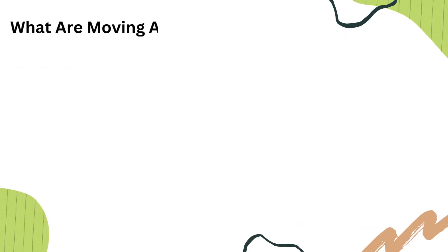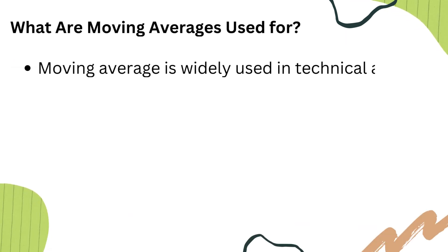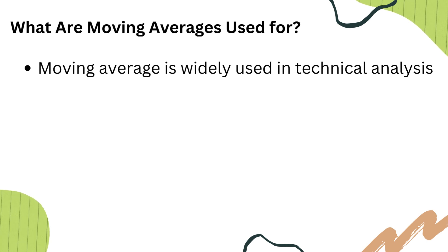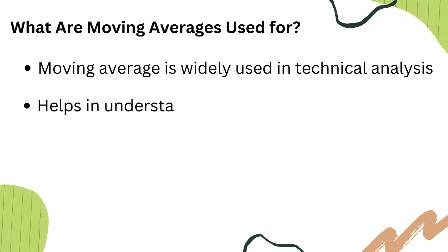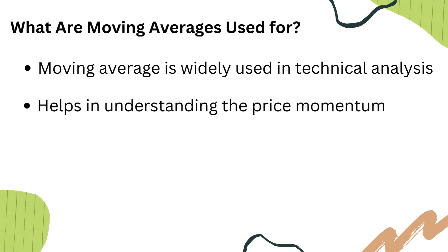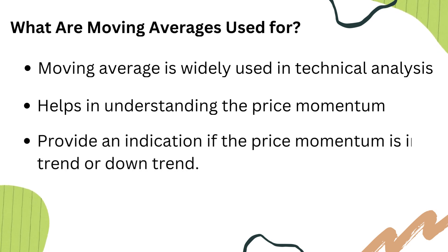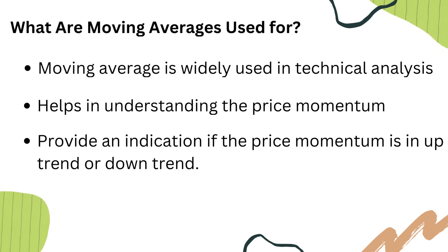What are moving averages used for? The moving average is widely used in technical analysis. It helps in understanding the price momentum of a share, and also provides an indication if the price momentum is in an uptrend or downtrend.